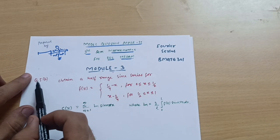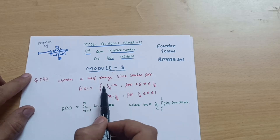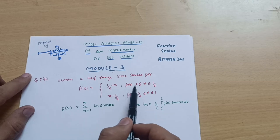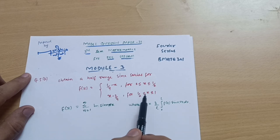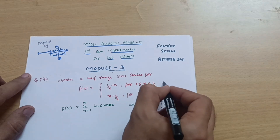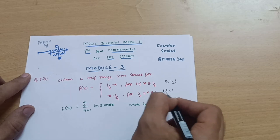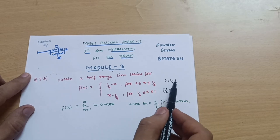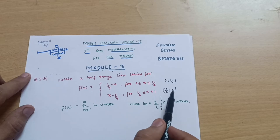Obtain a half range sine series for f(x), where f(x) = (1/4 − x) for 0 ≤ x ≤ 1/2, and f(x) = (x − 3/4) for 1/2 ≤ x ≤ 1. So the interval 0 to 1/2 has function (1/4 − x), and the interval 1/2 to 1 has function (x − 3/4).